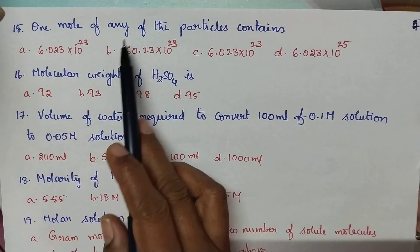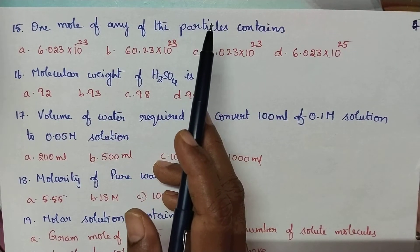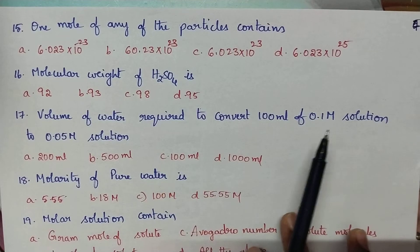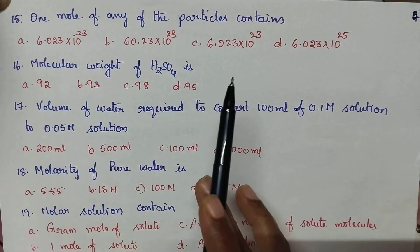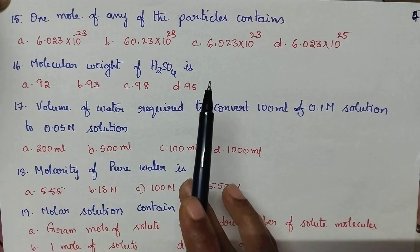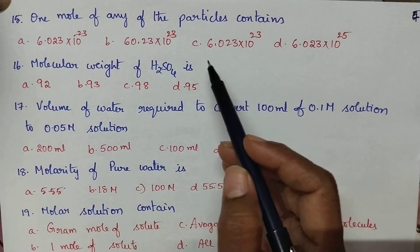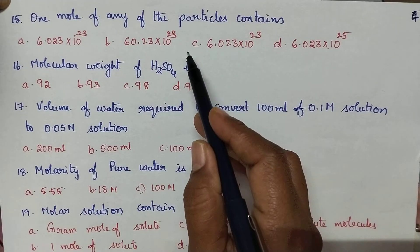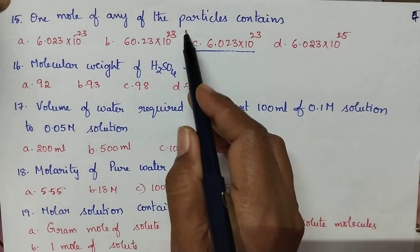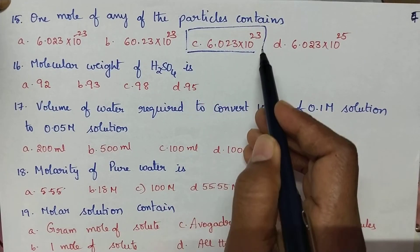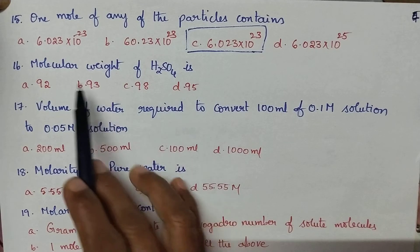One mole of any particle contains Avogadro's number of particles. The value of Avogadro's number is 6.023 × 10²³. So option C is the right answer.